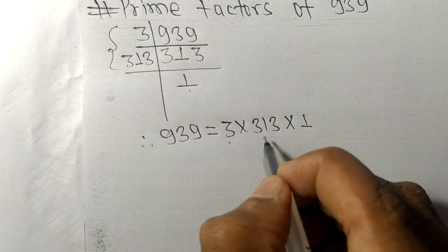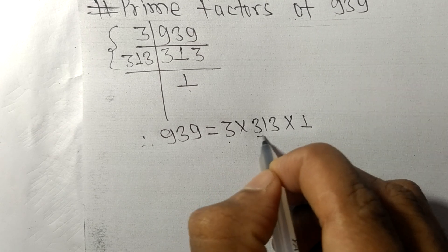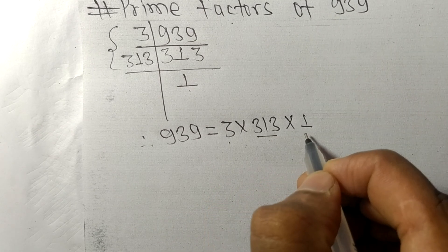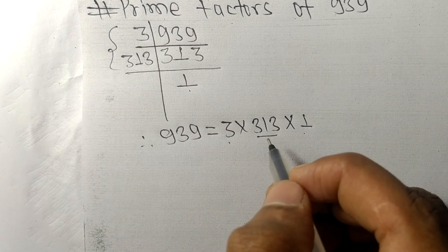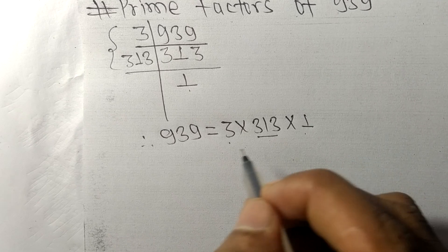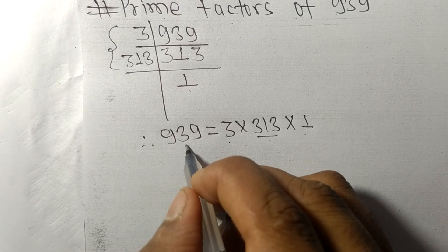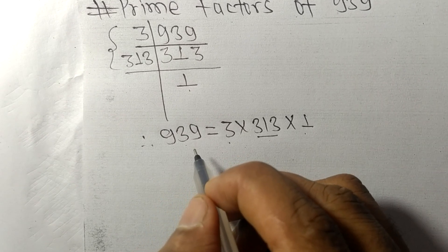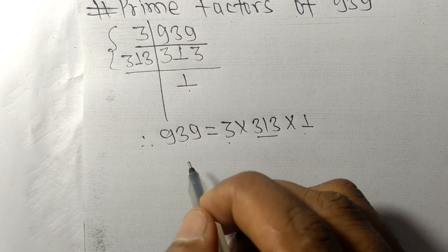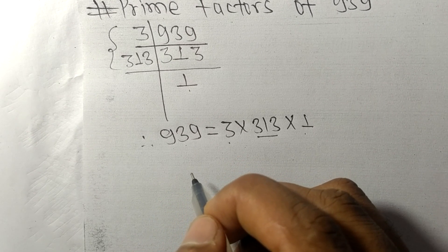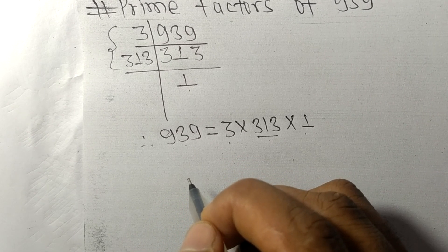So 3, 313, and 1 are the prime factors of 939. That's all for today, thanks for watching.